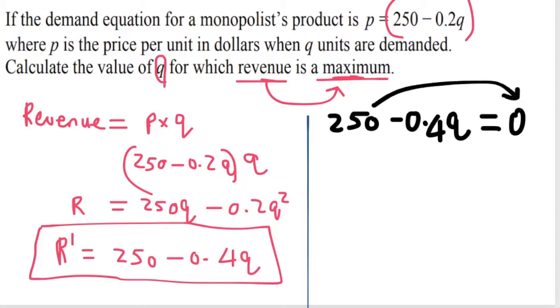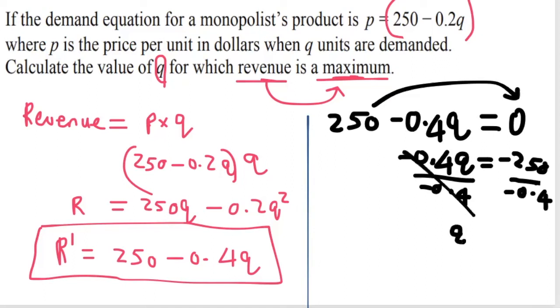Now solving, I carry this over the equal sign. So I have minus 0.4Q is equal to negative 250. Then I divide both sides by minus 0.4. So these cancel, so Q is equal to 250, and you divide it by 0.4. You realize I said 250 because the signs will cancel. So this will give me 625 units.